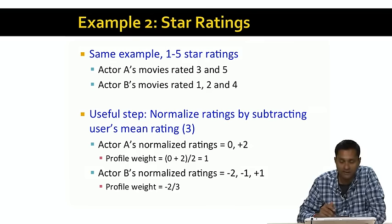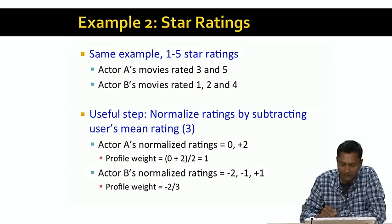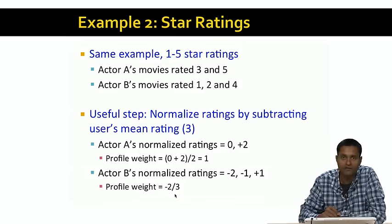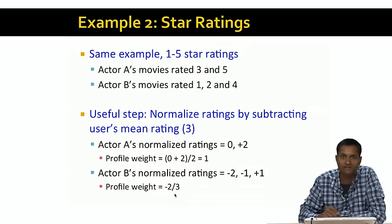Notice that this captures the intuition that the user did not like the first two movies with actor B, whereas they really liked the second movie with actor A, and the first movie with actor A was kind of average. Once you do this normalization, you can compute the profile weights. In this case, you divide not by the total number of movies, but by the number of movies with a specific feature. There are two movies with actor A, so the profile weight for actor A is (0+2)/2 = 1. And the profile weight for actor B is (-2-1+1)/3 = -2/3. This indicates a mild positive preference for actor A and a mild negative preference for actor B.